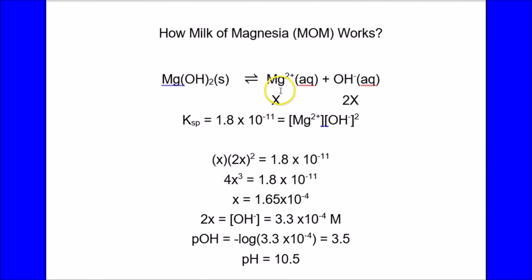When it does dissolve, whatever dissolves breaks up into magnesium ions and hydroxide ions. There should be two in front of that. The Ksp solubility product is 1.8 times 10 to the minus 11, and that's equal to the magnesium concentration times the hydroxide concentration squared. We call one x, the other is 2x. And that's 4x cubed.